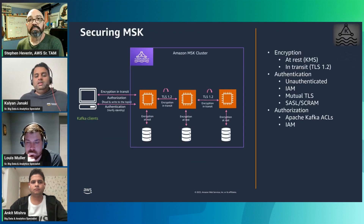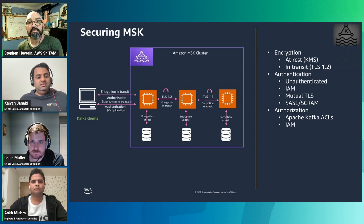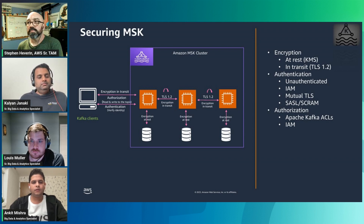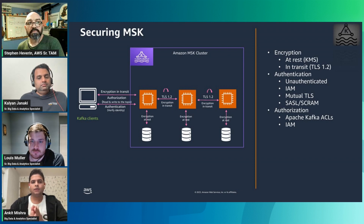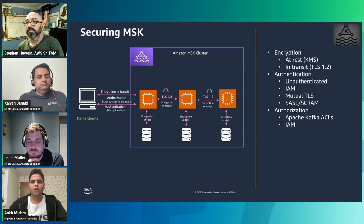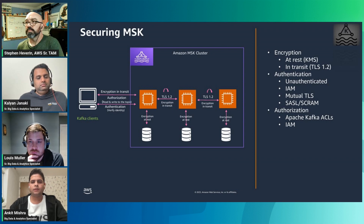The next best practice is about securing your MSK clusters. Ankit, do you want to talk about how to secure MSK? Security is our highest priority at AWS. MSK security is categorized into four parts: encryption, authentication, authorization, and network-level security. For encryption, we have encryption at rest and encryption in transit. Encryption at rest uses a KMS key and is enabled by default. Encryption in transit uses TLS 1.2 — that's a transport layer security protocol, the extended version of SSL.